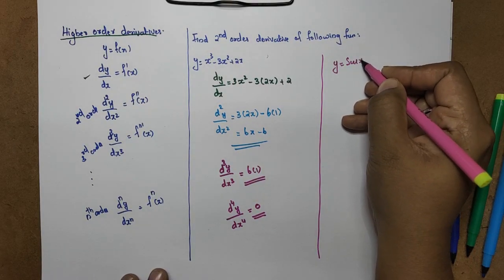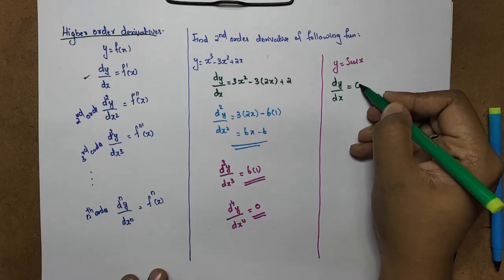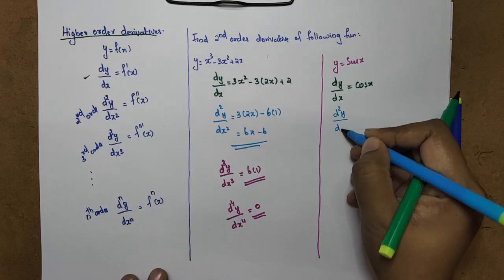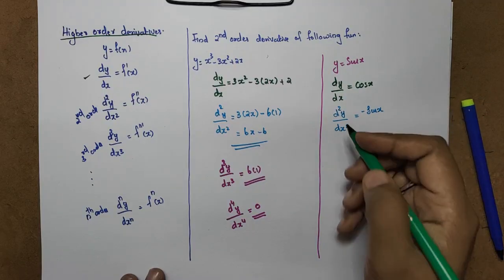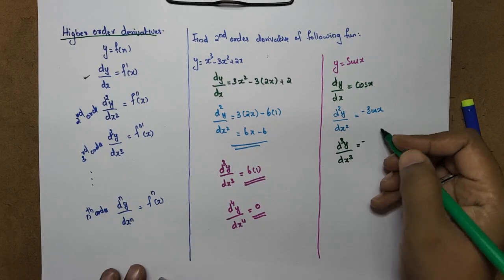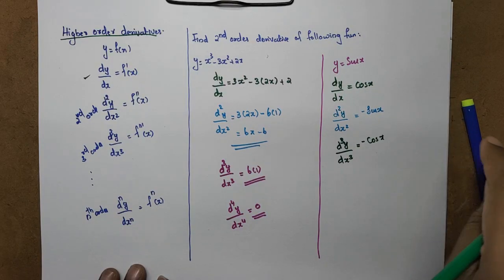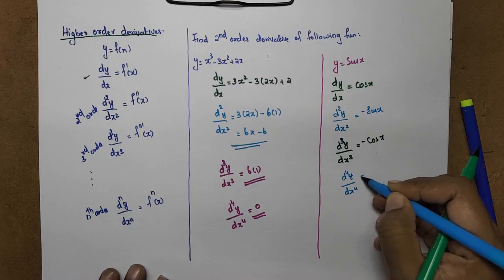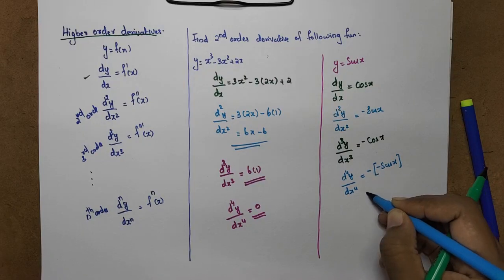Now, y is equal to sin x. dy/dx: the derivative of sin x is cos x. d²y/dx²: the derivative of cos x is minus sin x. d³y/dx³ is equal to minus sin x — the derivative of cos x gives minus sin x. d⁴y/dx⁴: differentiating minus sin x gives minus cos x, and the pattern continues.